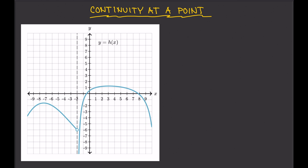Let's look at another graph — this is a graph of the function h of x. Is the function continuous at x equals 2? Where's x equals 2? It's here. You try to look at the point at x equals 2, and nothing's wrong there. So this is continuous at x equals 2. How about at x equals negative 2? You look at the graph and examine — there's a hole there. And not just a hole, but this is actually the asymptote of this graph, so the function goes to infinity. Clearly, this is not continuous at x equals negative 2.